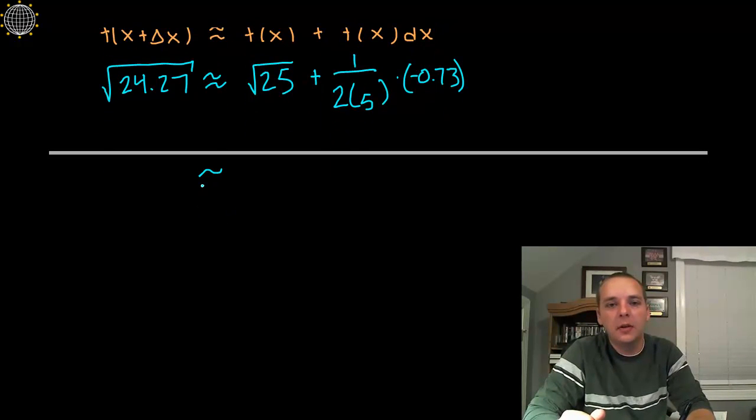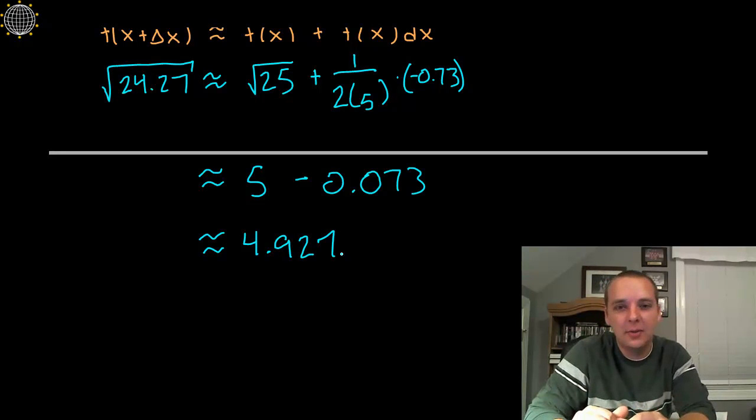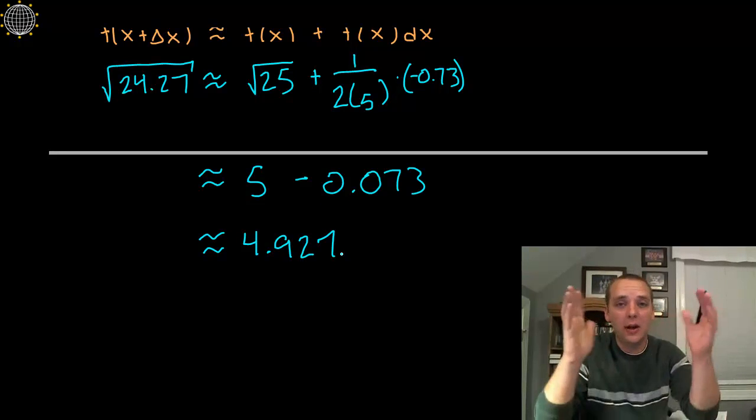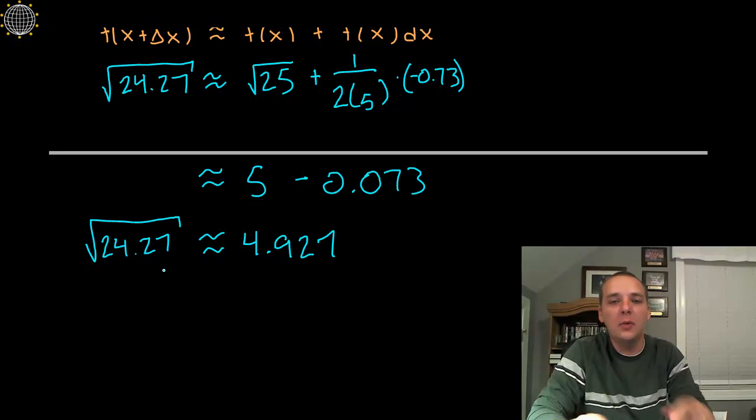Plug and chug, do a little algebra here. Square root of 25 is 5, 1 divided by 2 times 5 is 1 tenth, 1 tenth of 0.73 is 0.073, that's a tenth of that number, and then 5 minus 0.073 would be 4.927. Notice no calculator, we did all that pencil and paper. This should be pretty darn close to the square root of 24.27. Now I found that quantity without the aid of a calculator, just using differentials.